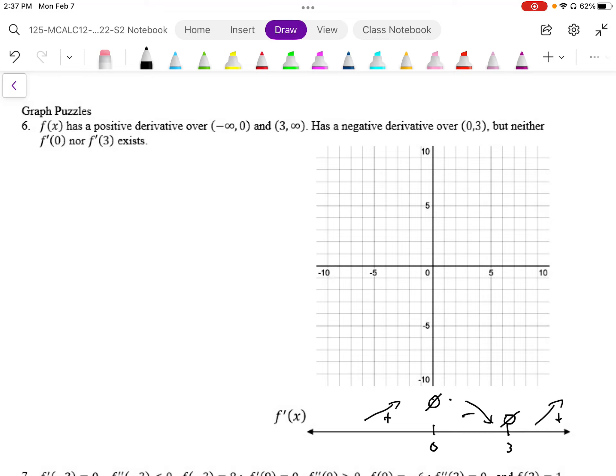So what ends up happening then is we have some kind of kink at the graph there. So we can draw any graph here. It could be a curving graph, and then it's going to be curving like that. And then we just know that those points are non-differentiable.